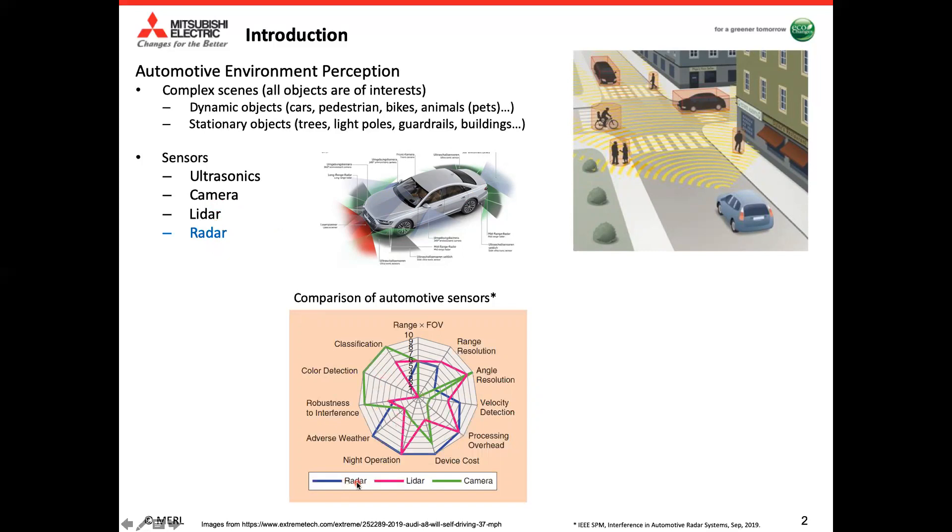So if we look at this figure, you can see each sensor has its own pros and cons. For automotive radar, it's pretty good at operating under adverse weather condition, light condition. The device cost is pretty low. On the other hand, if you look at angle resolution, the automotive radar is relatively behind the LiDAR and the camera. So there are a lot of interest right now in improving the angle resolution of automotive radar, but without significantly increasing the device cost as well as the processing overhead. So one way to address that is using the concept of MIMO radar, which creates a large virtual array to improve the angle resolution with a relatively small number of antennas.